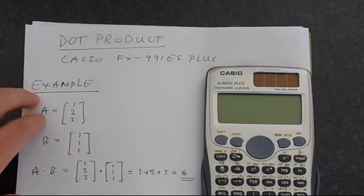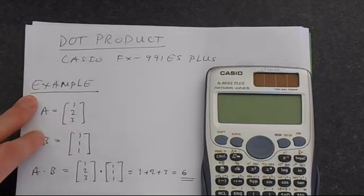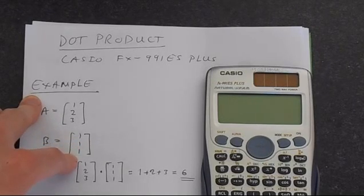So if we've got a vector A which is just 1, 2, 3 and a vector B which we'll just make 1, 1, 1 for simplicity.